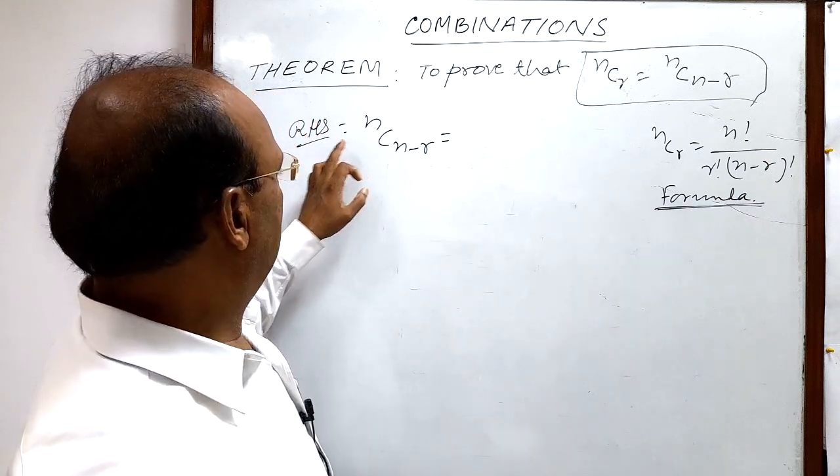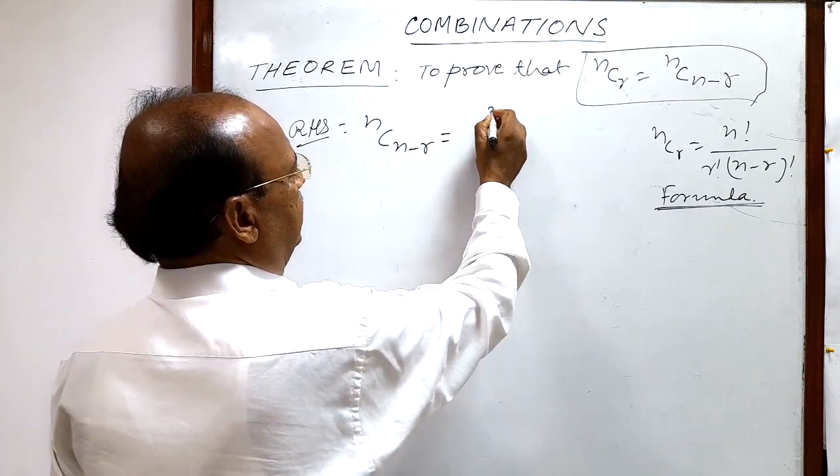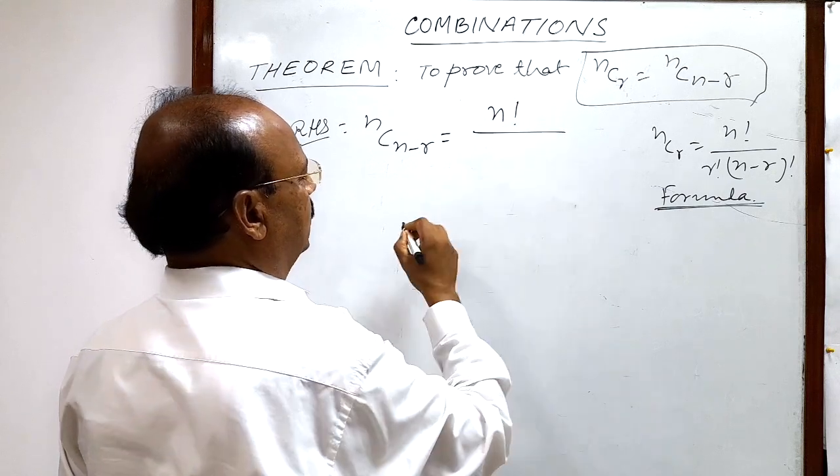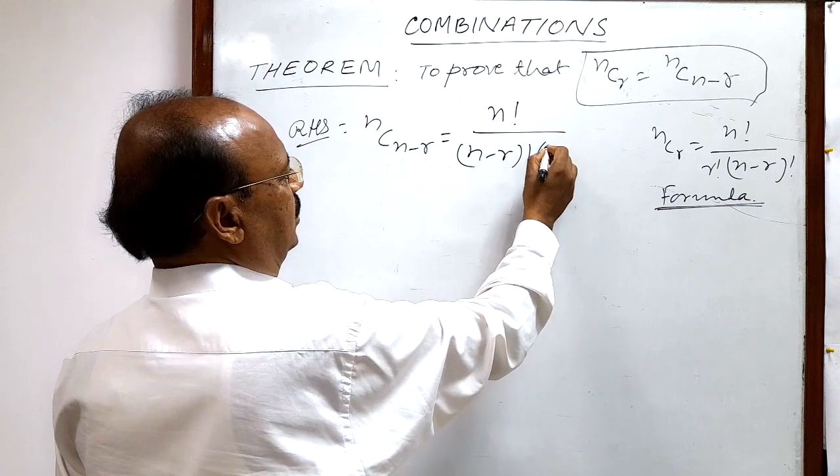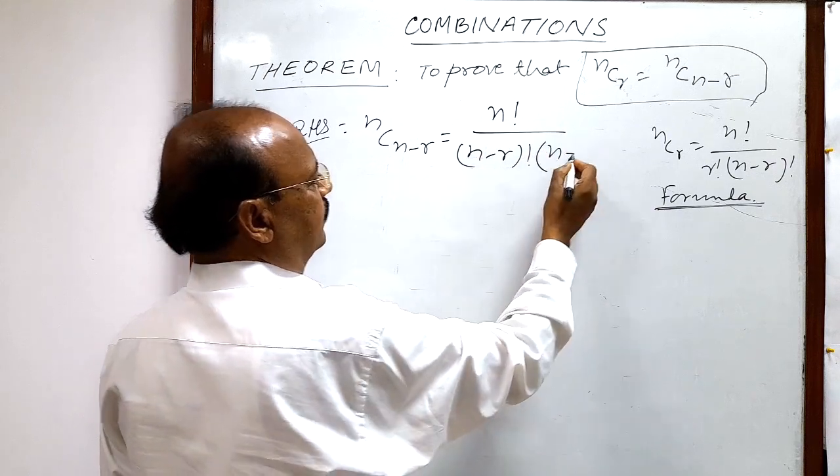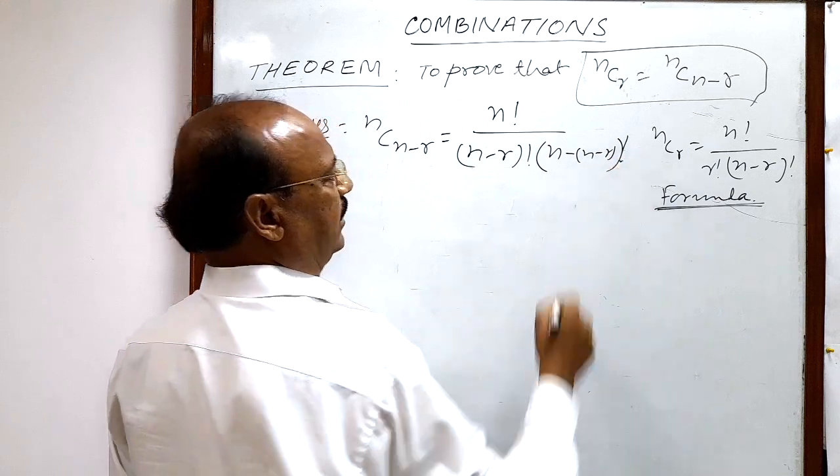So RHS is nC(n minus r), and with the help of this formula we can write this is equal to n factorial by (n minus r) factorial times (n minus r) factorial.